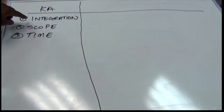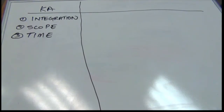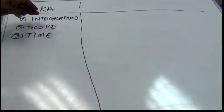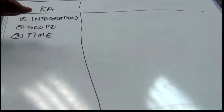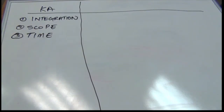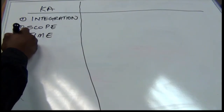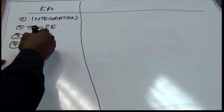Now for integration management, which I failed to define for you: integration management is all about the effective coordination of the project. You'll see why it makes more sense to talk about integration towards the end, because integration is all about effectively coordinating everything else. So that's time management, the third one. The fourth one is cost management.